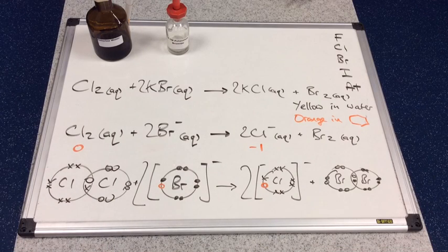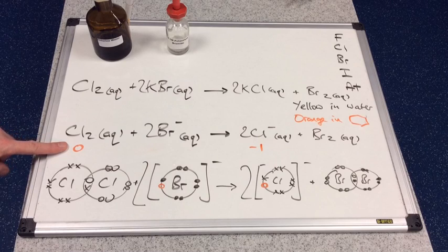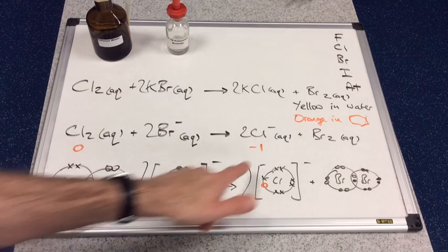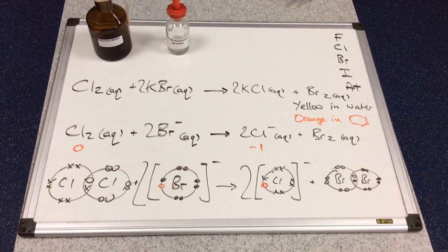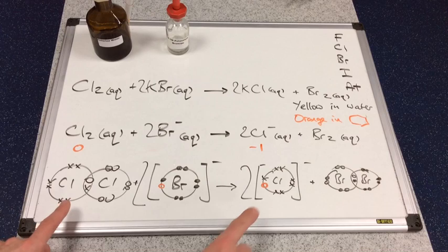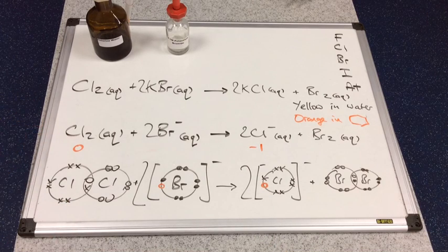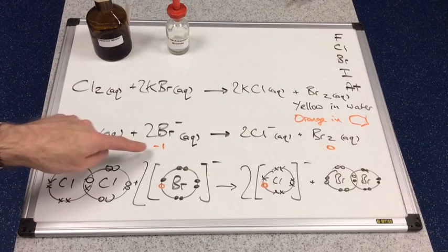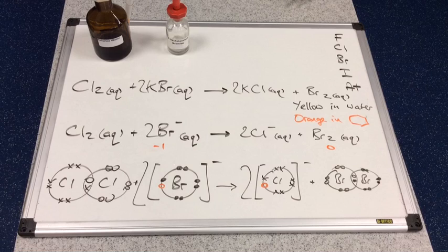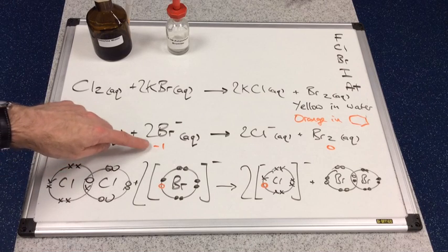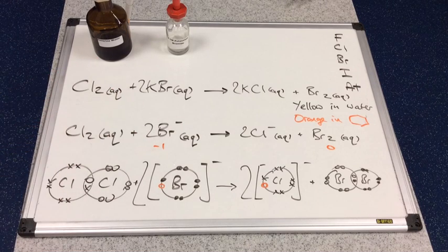In terms of oxidation number, we've got a zero oxidation number for chlorine in Cl2. But we've obviously got a minus one oxidation number there. So, that's a drop in oxidation number. So, that's a reduction process. Gain of electrons. Drop in oxidation number. For the bromine species, we've got a negative one oxidation number in bromide. But a zero oxidation number in bromine. So, the oxidation number has increased by one. That's an oxidation process.